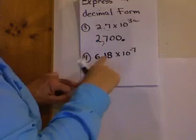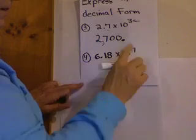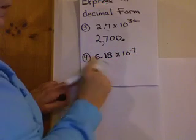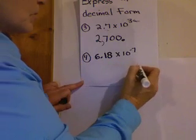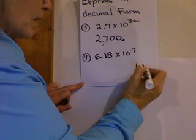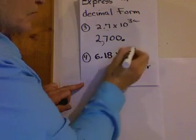Alright, this one. 6.18 times 10 to the negative 7. Negative 7. Now, am I going to make the number bigger or smaller? I hope you said smaller. So, let's write the 6, 1, 8. That's where the decimal point is. I have to move 7 places.